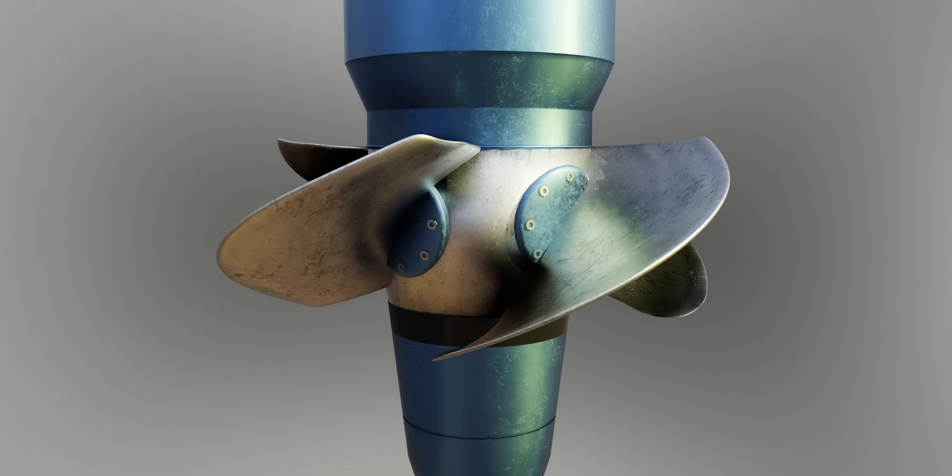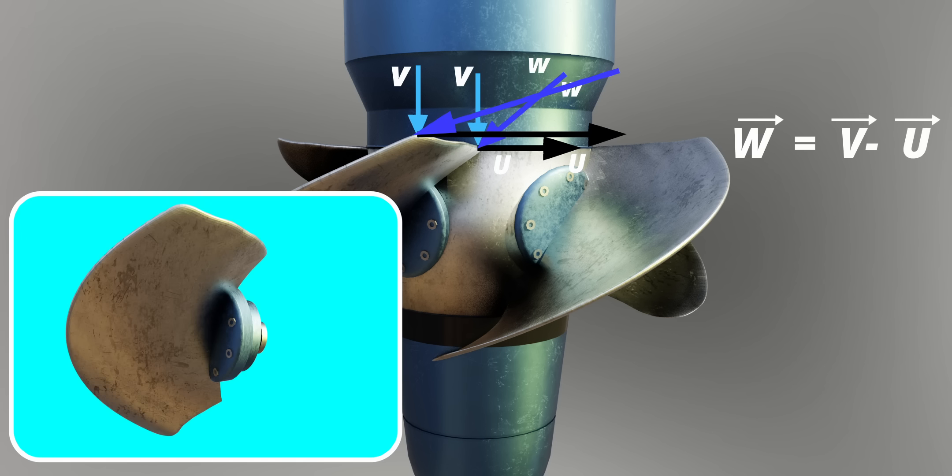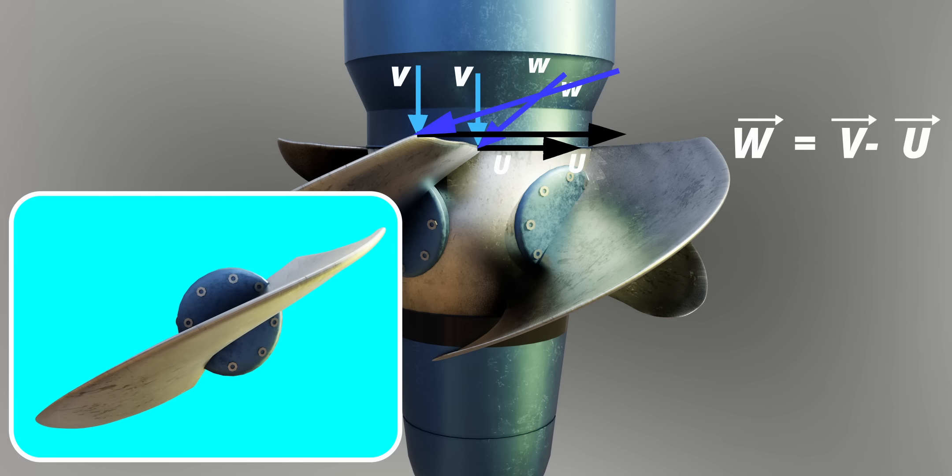If you observe the blade of the Kaplan turbine, it's twisted. The reason is again the optimum angle of attack. The blade velocity increases towards the tip. Here, again, we need the optimum angle of attack for the relative velocity of water. The way to achieve this is by twisting the blade as shown. That's why Kaplan turbines have beautifully twisted blades.